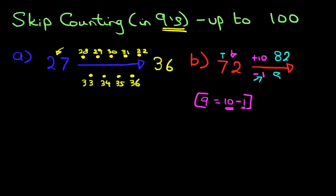And now, we're going to subtract one. 82 minus one, just count back one. It's 81. That is our answer. 81. You add ten, because that's very simple, and then you subtract one.